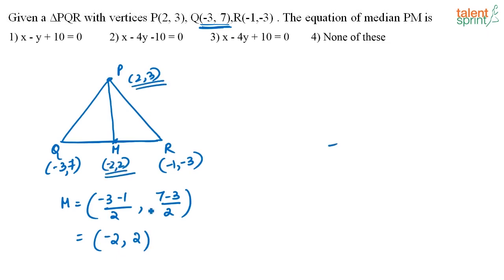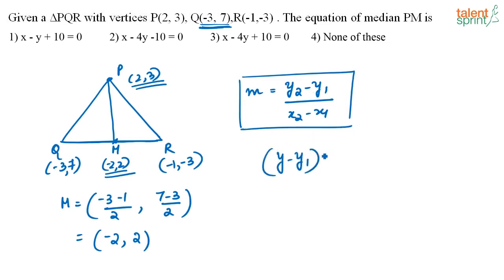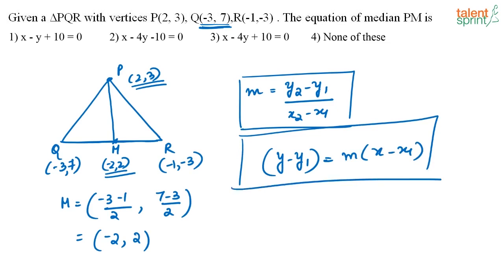You know M is (-2, 2) and P is (2, 3). To find the equation of line PM, first find the slope using y2 minus y1 by x2 minus x1. Once you have the slope, write the equation using y minus y1 equals m into x minus x1.